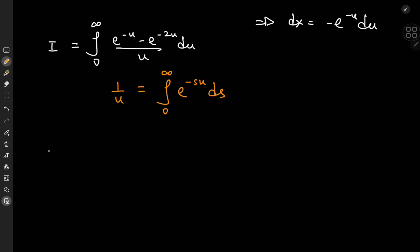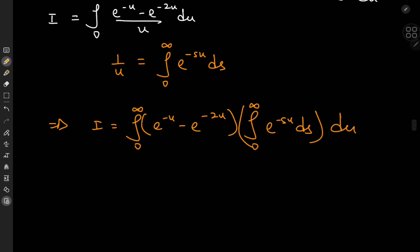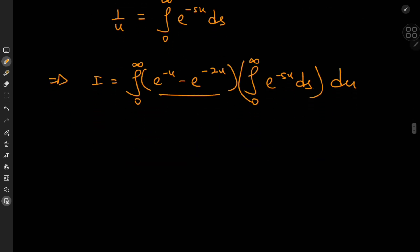So that means i is now an integral from 0 to infinity of e to the negative u minus e to the negative 2u times the integral from 0 to infinity of e to the negative s u ds du.